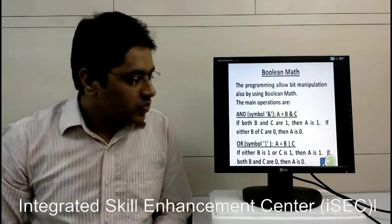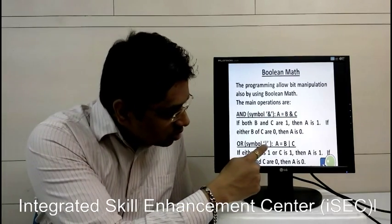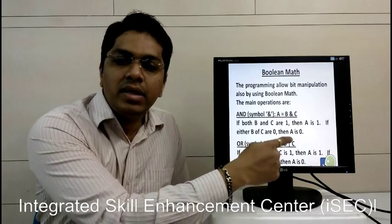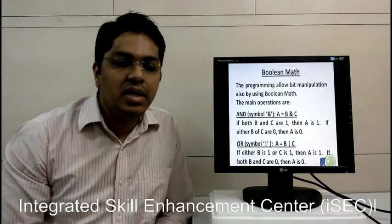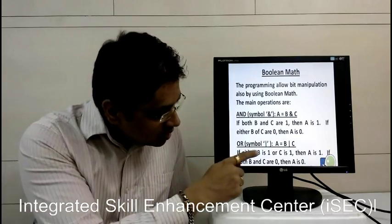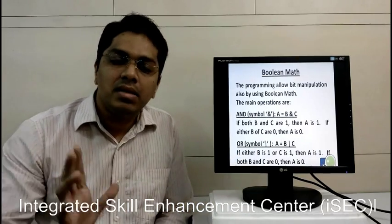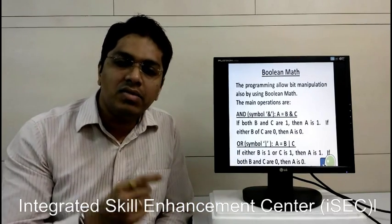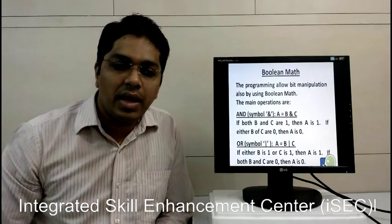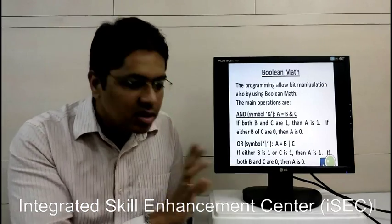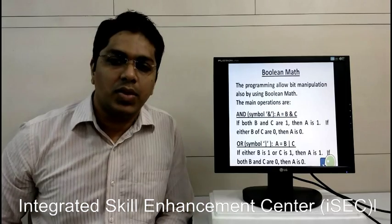Same in OR. The symbol is OR, A equals B or C. If either B is 1 or C is 1, then A is 1. Either one of the input is 1, the output A is 1. If both B and C are 0, then the output is 0.